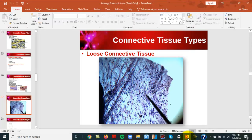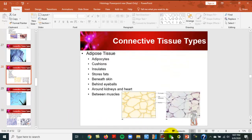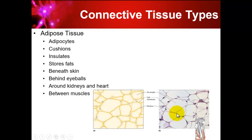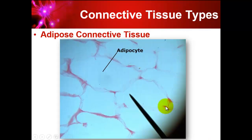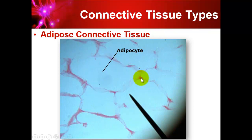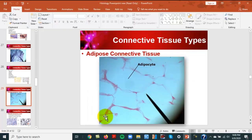Adipose doesn't really look like anything else — to me it looks like chicken wire. In the drawings, each unit is one adipocyte. In the actual tissue slide, you can see about ten adipocytes; the nuclei get pushed to the side when the cells fill up with lipids.